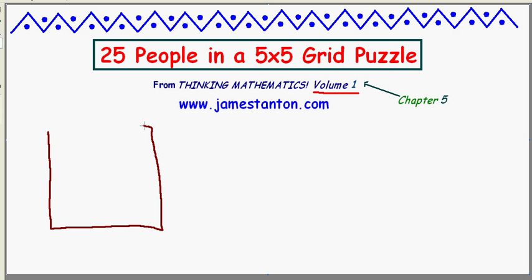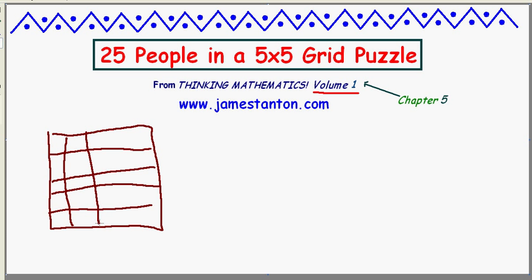Imagine there's a great big design drawn on the ground, simply just a 5 by 5 set of squares. Oops, I'm a lousy drawer. And imagine there are 25 people standing in this grid, one person per cell.